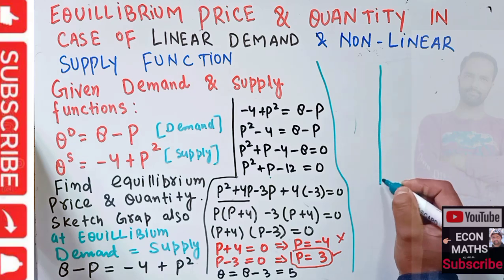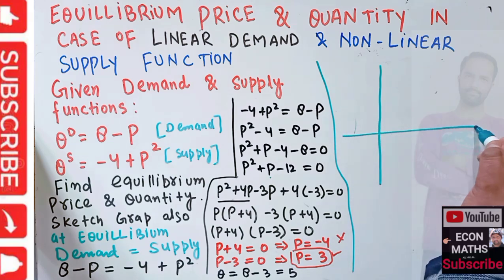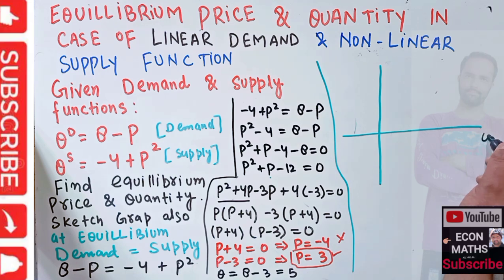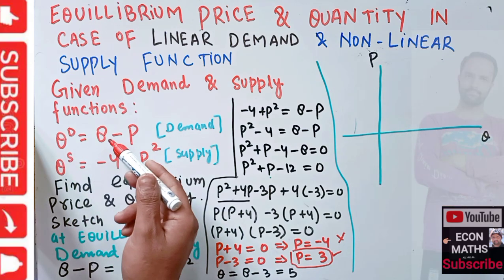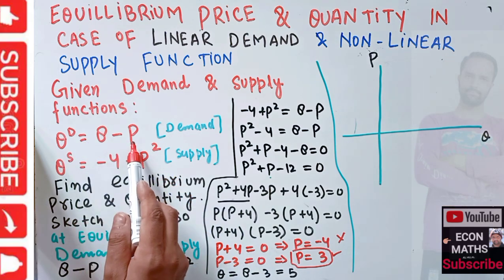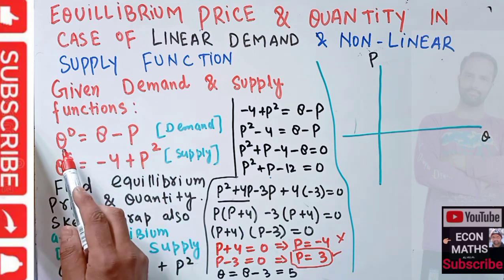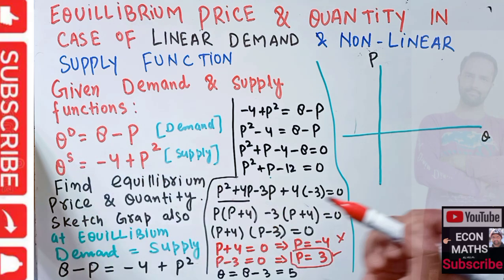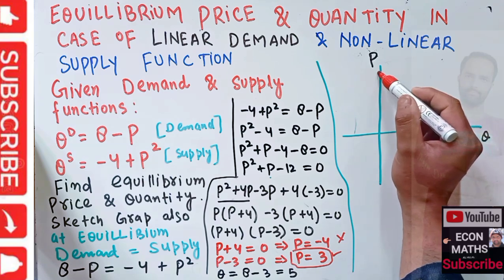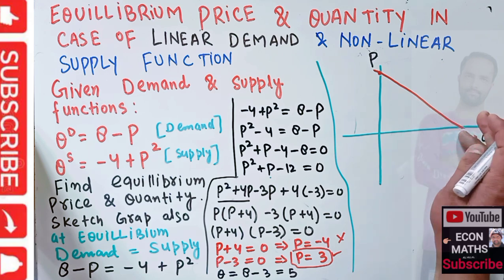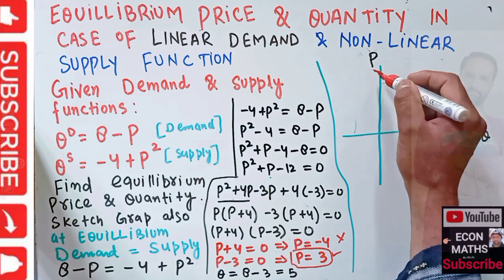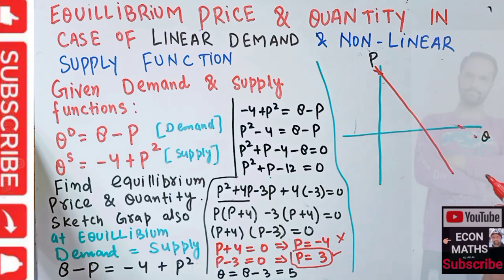Now let's show this graphically. We have quantity on the horizontal axis and price on the vertical axis. For the linear demand function, when Q = 0, P = 8, so the intercept is at 8. It has a negative slope, so this is our demand function.